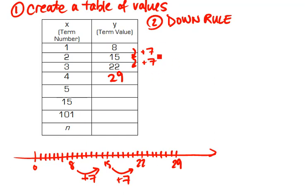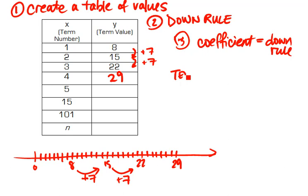So the way that I do that is I use the down rule, the plus 7, and I know that I put this as part of my coefficient. So the down rule becomes the coefficient of my algebraic expression. My term value will be 7 times the figure number because it goes up by 7 each time. If I went up by 5 each time, it would be 5n. If I went up by 10 each time, it would be 10n.